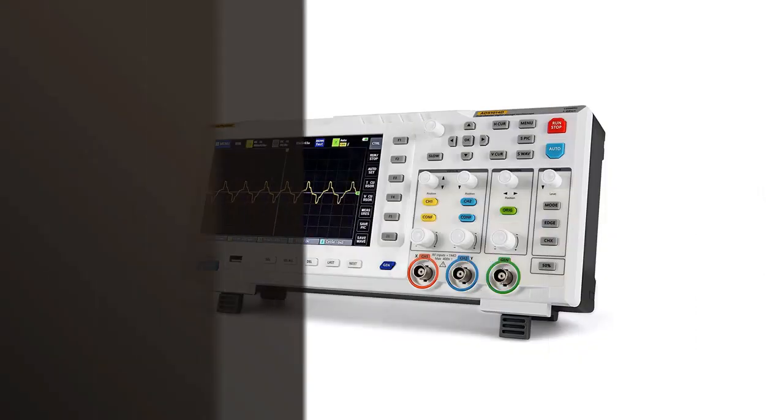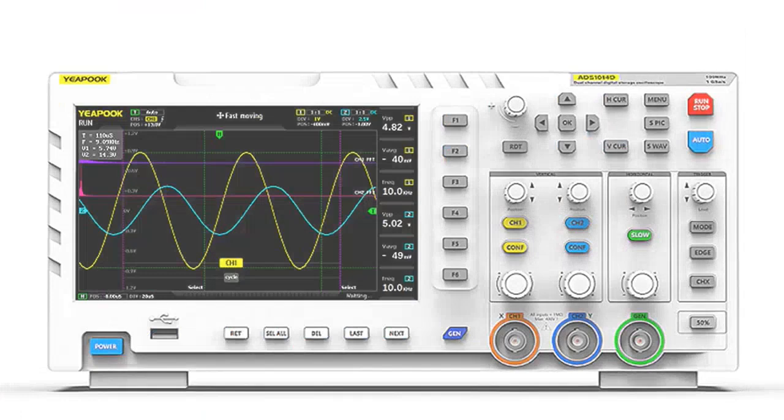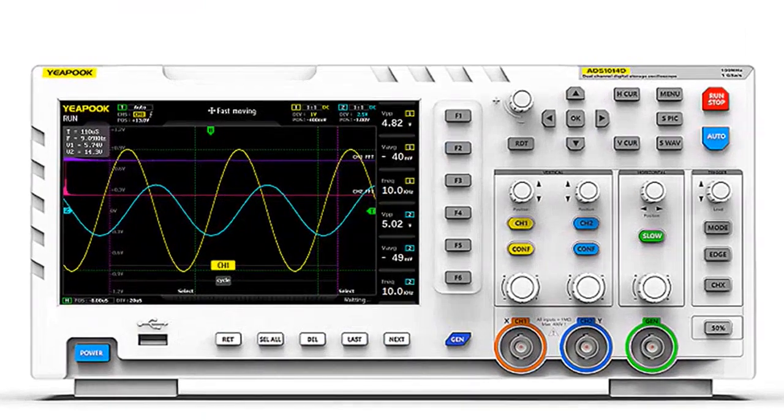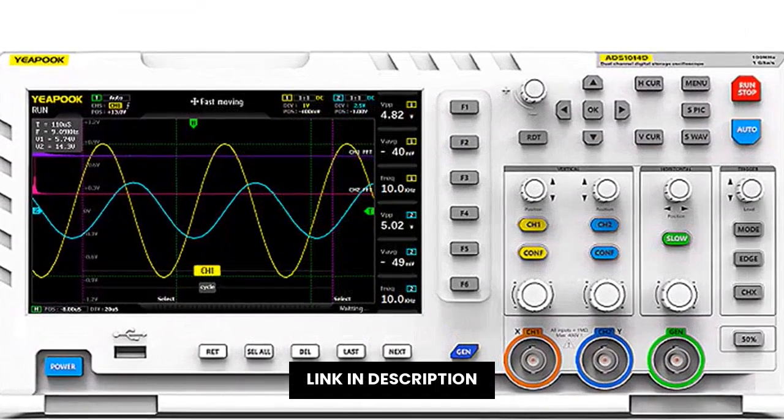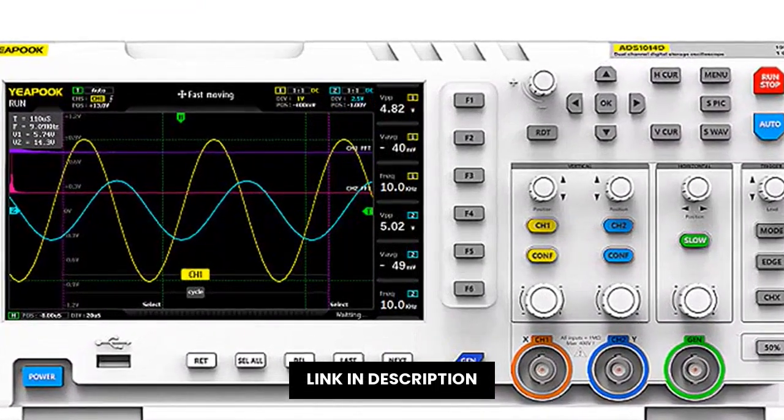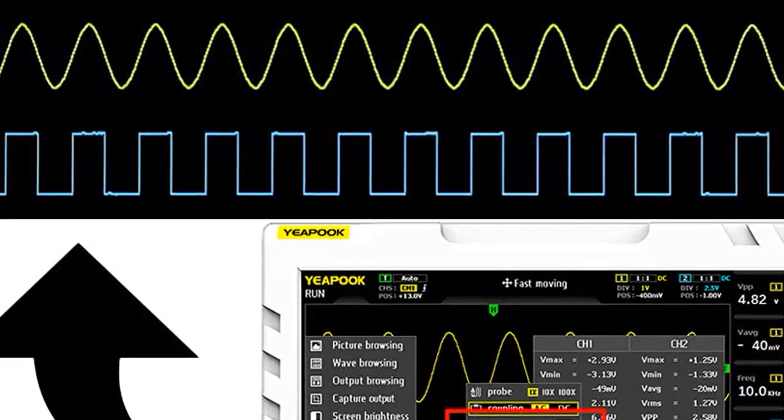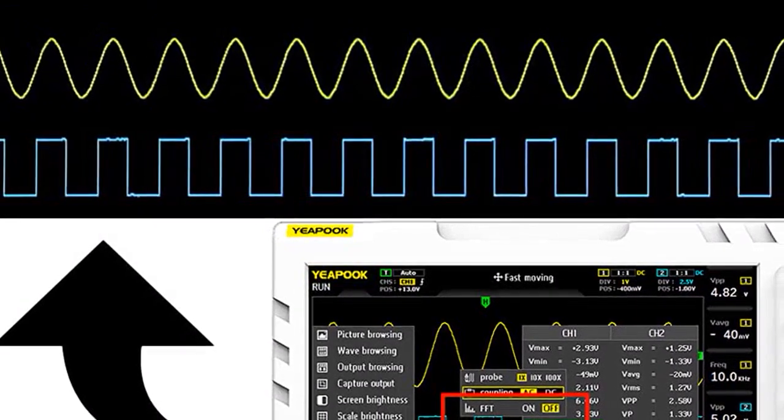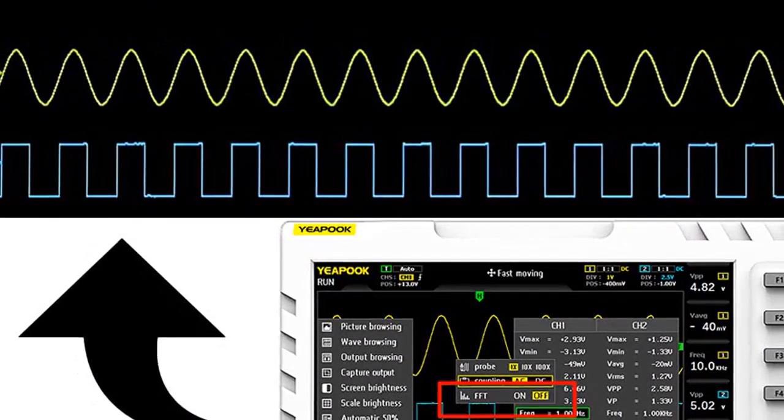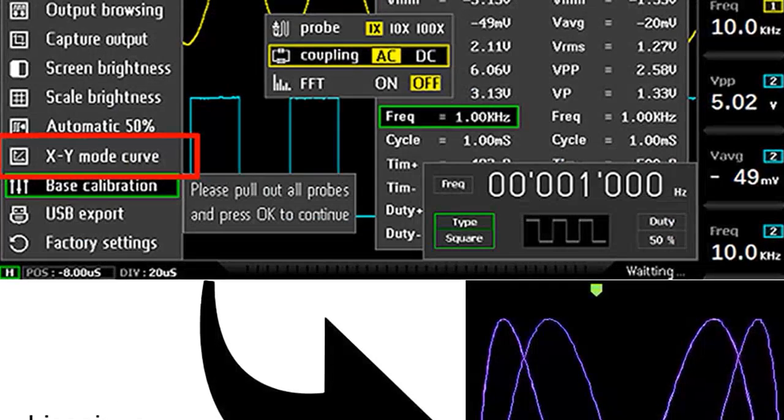Looking for a powerful oscilloscope that can handle a variety of testing and measurement tasks? Look no further than the YIHUA ADDS-1014D 2 in 1 digital oscilloscope DDS signal generator with two channels 100 MHz bandwidth 1GSa/s sampling rate. This oscilloscope is designed for use in industrial and scientific applications, and comes with built-in features to make testing and measurement easier. Plus, its 100 MHz bandwidth and 1GSa/s sampling rate make it capable of handling a variety of signals.